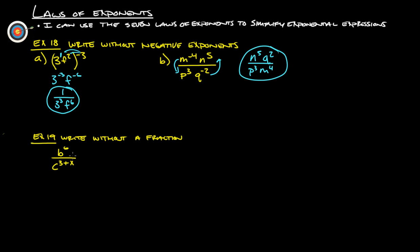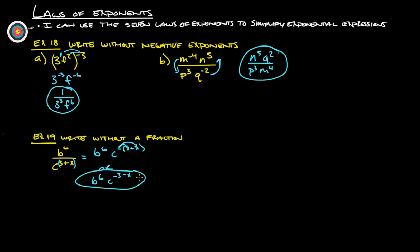Write this without a fraction: b to the 6th over c to the 3 plus x. Bases are not the same, so we can't simplify that way. Leave b to the 6th on top and move c to the top with a negative exponent. We write it as b to the 6th times c to the negative 3rd minus x, distributing the negative to both parts.